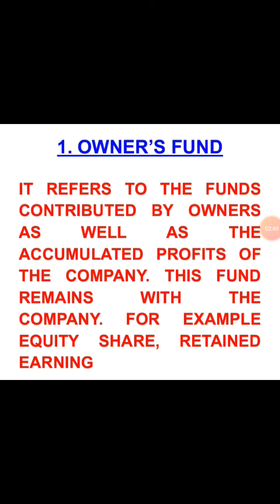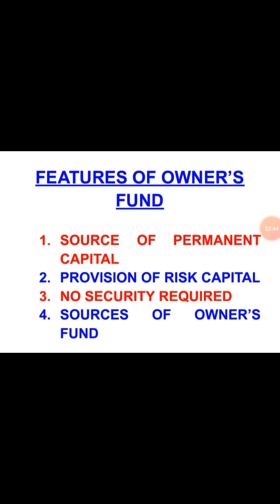Now let us talk about the features of owner's fund. The first feature is that it is a source of permanent capital. Owner's fund — the owner's money invested in the business — is a permanent capital. As long as the business runs, the owner's money remains invested in the business. Normally, under normal circumstances, an owner does not withdraw money from their business. There is no compulsion to return this money after a particular time period, and a large portion of owner's fund is used to acquire the fixed assets of the business. So ultimately, owner's fund is a permanent source of capital.